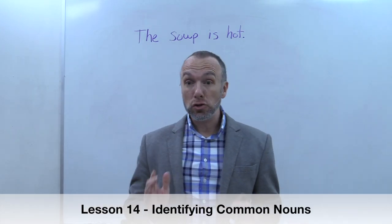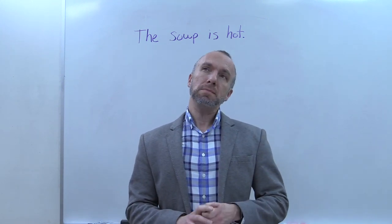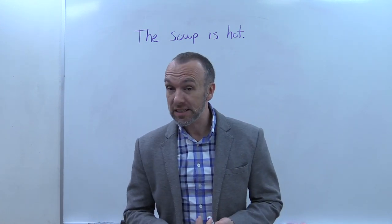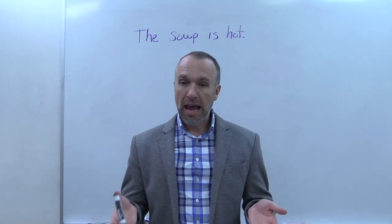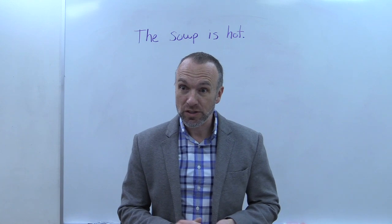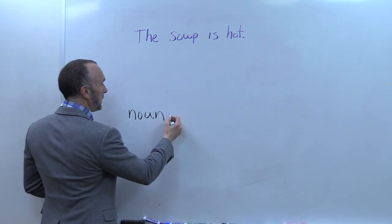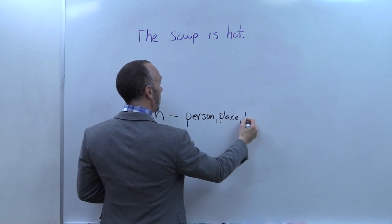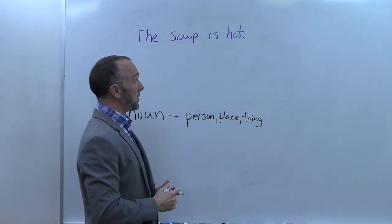We are starting a new section called identifying parts of speech. When you see a sentence and you read it, each word in the sentence is something. We're going to start by finding nouns. A noun is a person, a place, or a thing in a sentence.